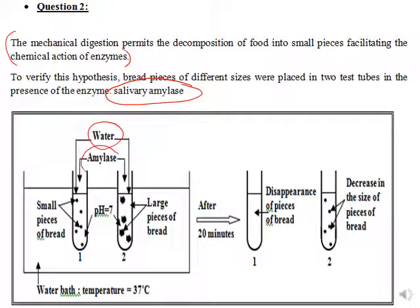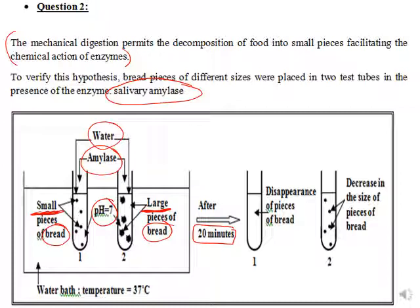Both tubes 1 and 2 contain water and amylase, both contain bread, and both have pH 7. The variable factor is the size of the bread pieces — in tube 1 we have small pieces of bread, while in tube 2 we have large pieces. After 20 minutes, in tube 1 the small pieces disappeared, while in tube 2 there is a decrease in the size of the bread pieces. So tube 1 shows complete digestion while tube 2 shows partial digestion.